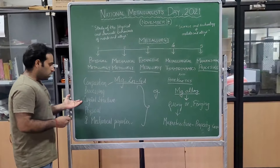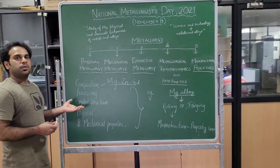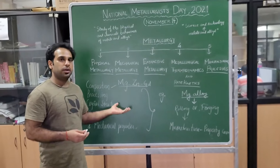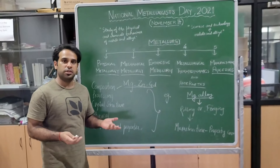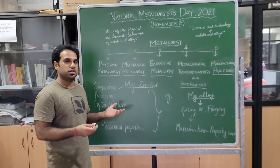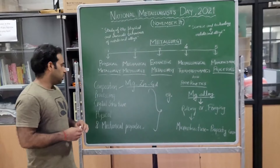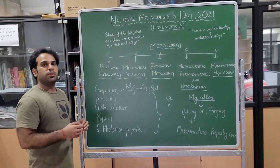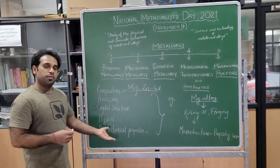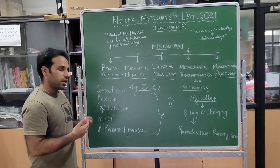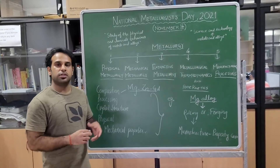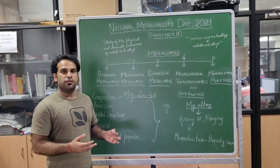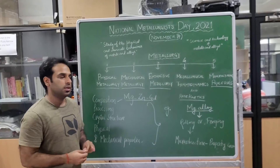Another focus area is the crystal structure, where we study in detail the crystal structure of the alloy or metal — for example BCC, FCC, or HCP — to understand what crystal structure that particular alloy has. Next is the physical property, for example the density of the material, and then the mechanical properties such as yield strength, tensile strength, fracture toughness, or fatigue — different kinds of static and dynamic properties.